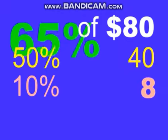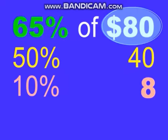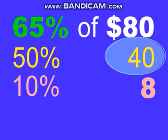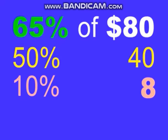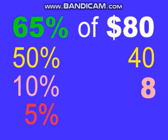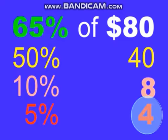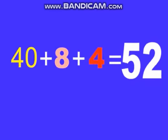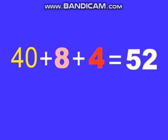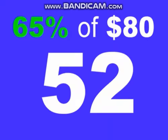How about 65% of 80? We know that 50% of 80 is 40, and we know that 10% of 80 is 8. 5% is half of 10%, so half of 8 is 4. And if we add it all up, we have 52. 65% of 80 is 52.